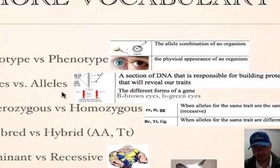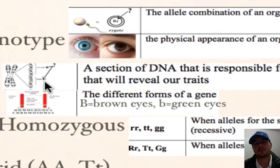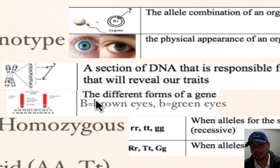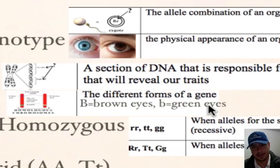Let's look at genes versus alleles again. A gene is just a piece of DNA — here's a section of DNA responsible for a certain trait. When we talk about alleles, we talk about more specifics: what specific gene is dad giving? For example, brown eyes or big B, or little b which would be green eyes — you're telling me exactly what eye color is being given. That's specific — those are alleles.